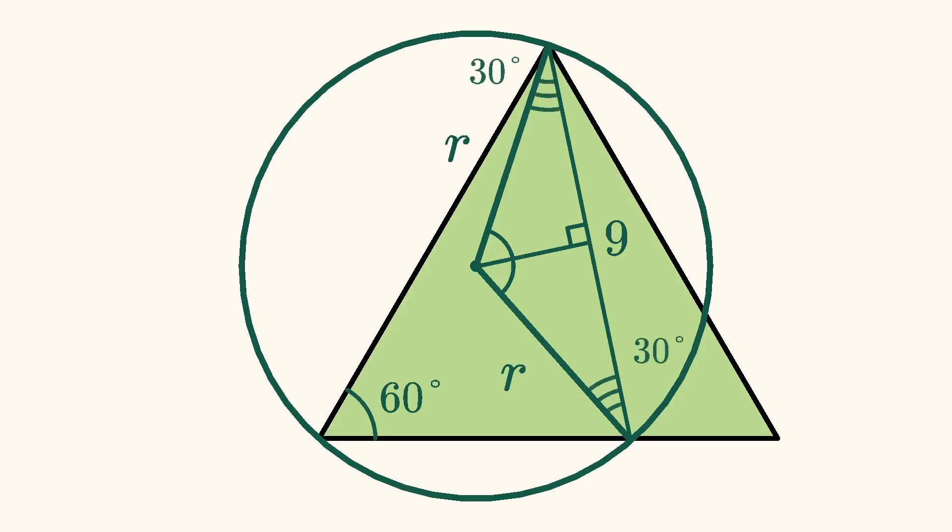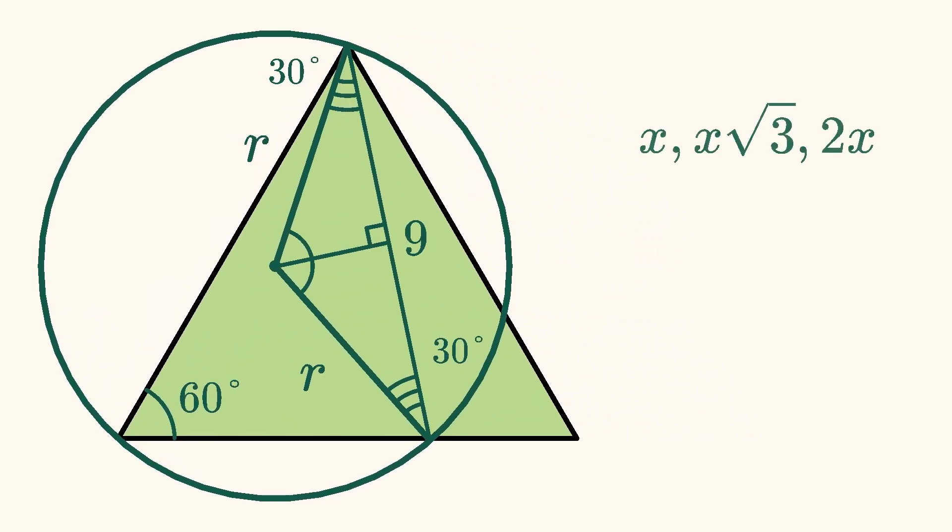The sides of a 30-60-90 triangle are always in the ratio of x, x square root 3, and 2x. For the triangles in our problem, the length of the longest side is r, which means the shortest side has a length of r over 2, and the remaining side has a length of r times the square root of 3 over 2.